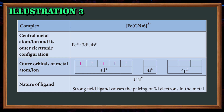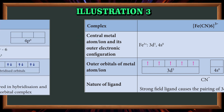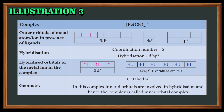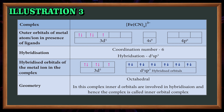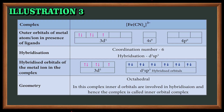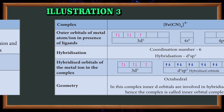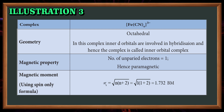Outer orbital of metal atom in presence of ligand: 3d5. The d orbital has five cells. The remaining two d orbital cells will be filled with ligand electrons, along with s1p3, forming d2sp3 hybridized orbitals. The geometry is octahedral. In this complex, inner d orbitals are involved in hybridization, hence this complex is called an inner orbital complex.